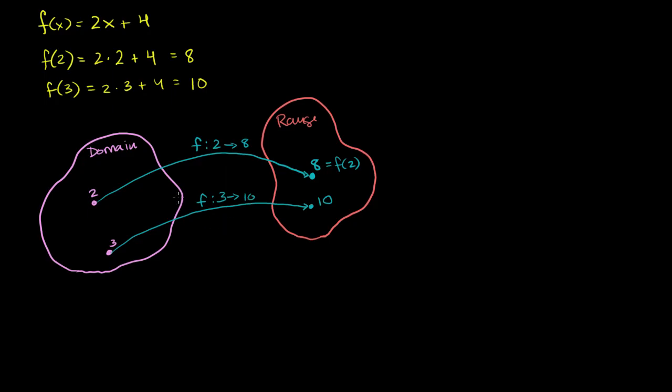Now, this raises an interesting question. Is there a way to get back from 8 to the 2? Or is there a way to go back from the 10 to the 3? Or is there some other function? We can call that the inverse of f that'll take us back. Is there some other function that'll take us from 10 back to 3? We'll call that the inverse of f. And we'll use that as a notation. And it'll take us back from 10 to 3. Is there a way to do that?